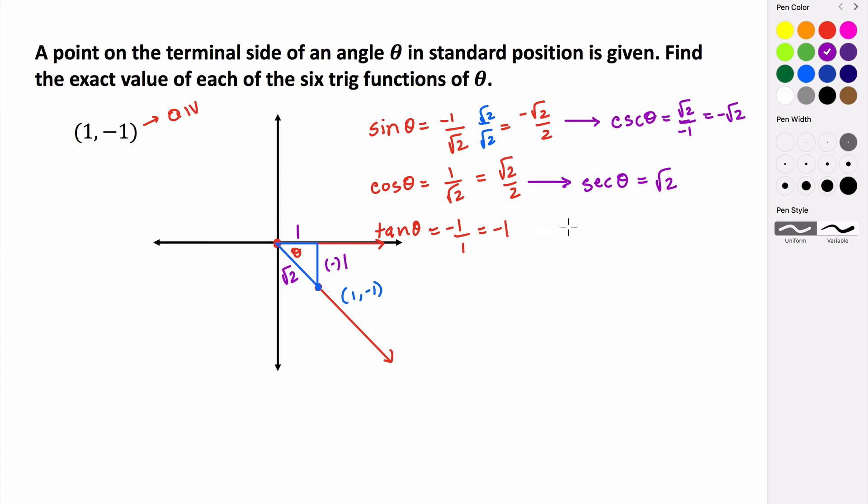And then taking the reciprocal of the tangent function is going to be the cotangent of θ. And that's going to be 1 over -1, which is just -1. So these are the values of our six trig functions, given the point (1, -1) lies on the terminal side of our angle.